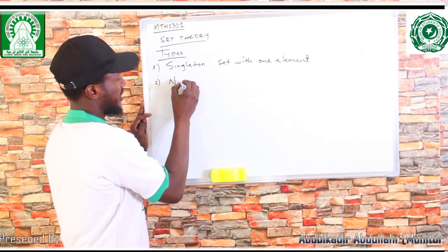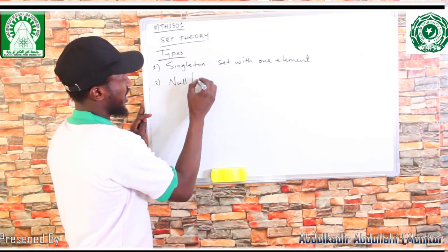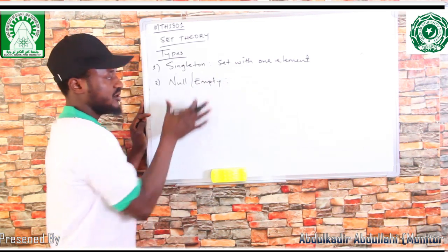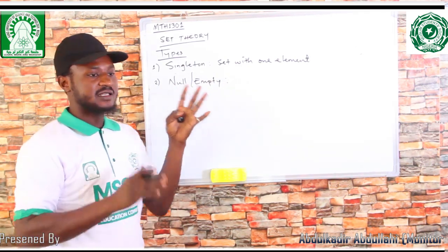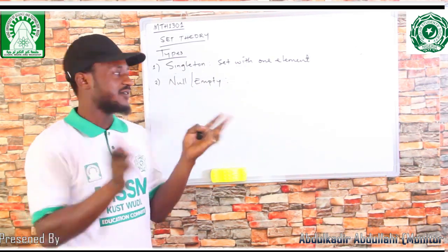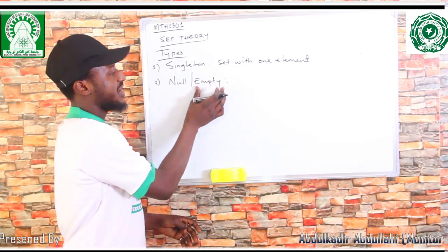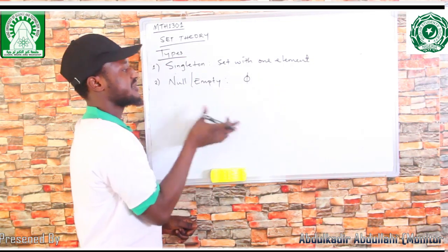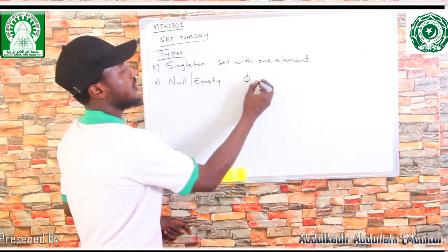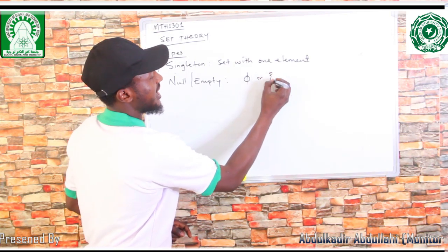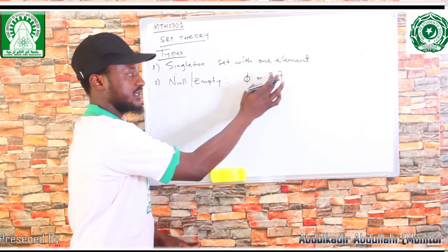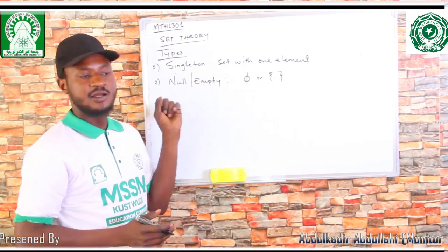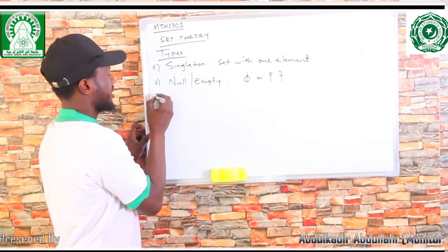Number two, we have what we call null or empty set. This null or empty set is a type of set that has no element in it — it has an empty element. It is denoted by the empty set symbol (∅). Whenever you see this symbol, it means the set is empty. Sometimes you will see an empty curly bracket {}. When you see an empty curly bracket or the ∅ symbol, it means it is a null set.